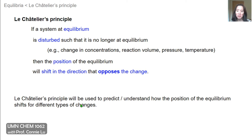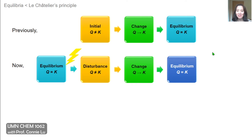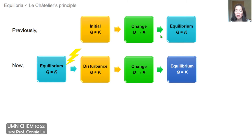This is an important principle because we will use it to predict and understand how the position of equilibrium shifts for each of these different types of changes. Previously, I showed you a flow chart where the key steps were: you have an initial situation that's not at equilibrium, so Q does not equal K, and then you reach equilibrium where Q equals K. The important thing was to figure out what reaction direction and how much change would occur to get from initial to equilibrium.